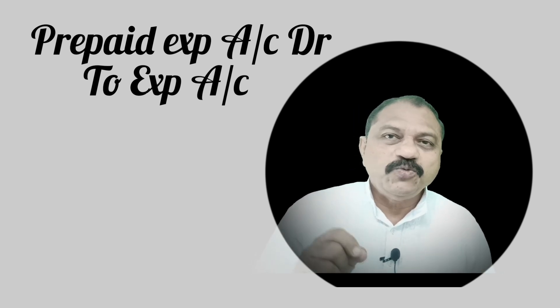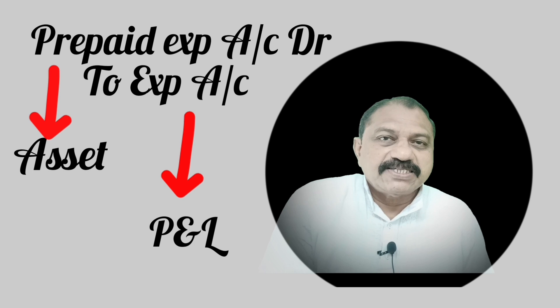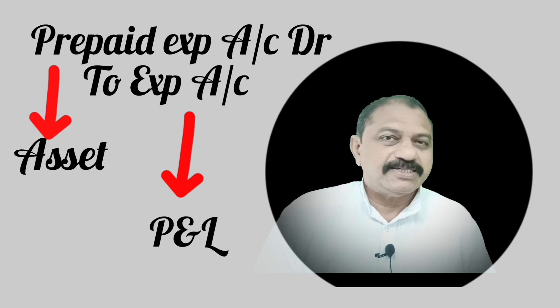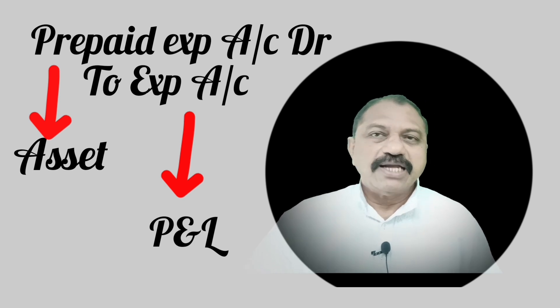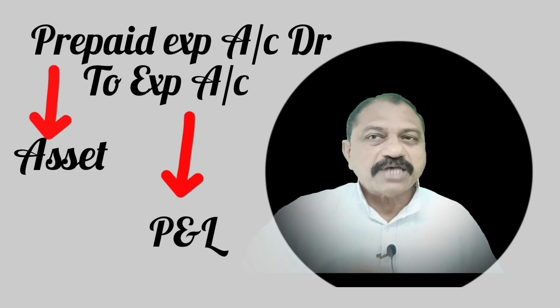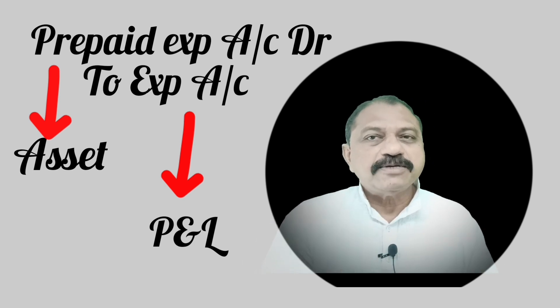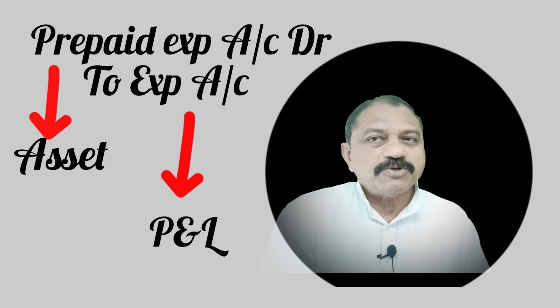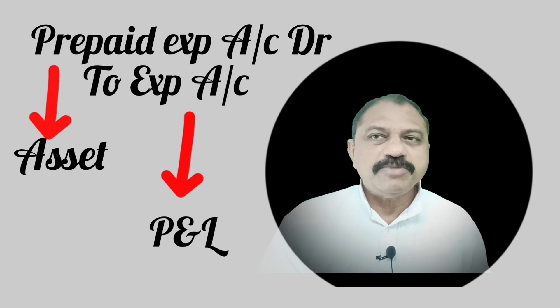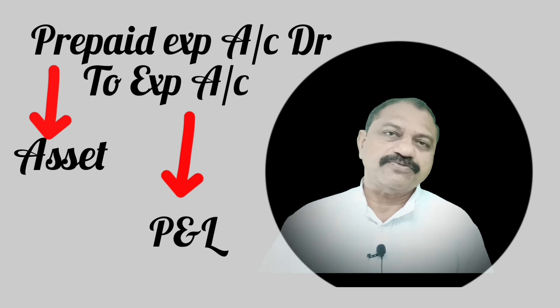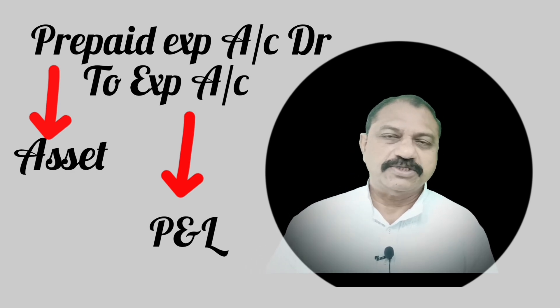Therefore, the adjusting journal entry is: prepaid expense account debit to expense account. Prepaid expense will appear as an asset on the balance sheet asset side. And expenses, after deducting prepaid expense, will be shown at the debit side of the Profit and Loss account.